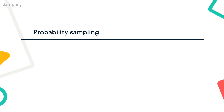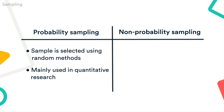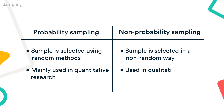Probability sampling means the sample is selected using random methods. It's mainly used in quantitative research. Non-probability sampling means the sample is selected in a non-random way. It's almost always used in qualitative research, and it can also be used in quantitative research. The sampling method you use affects how confidently you can generalize your results to the population as a whole. Let's take a closer look at these two approaches.